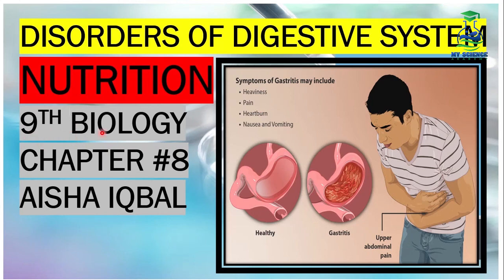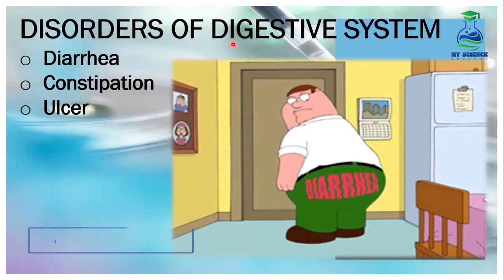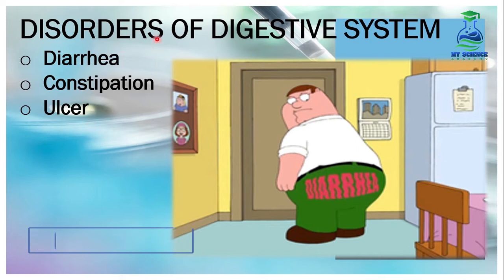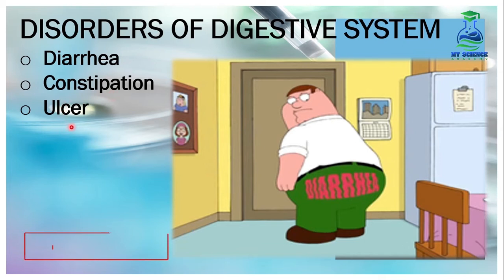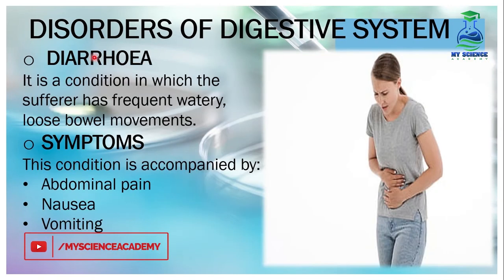Welcome to our channel, students of Biology 9 class. Today we are going to discuss the last topic in chapter 8, that is disorders of the digestive system. A digestive disorder means any type of health problem related to the digestive tract. Here we will discuss the most common 3 digestive disorders: Number 1, diarrhea; Number 2, constipation; and Number 3, ulcer.